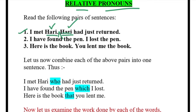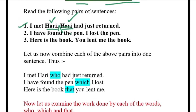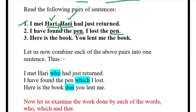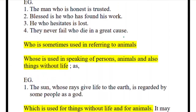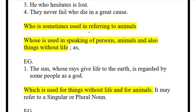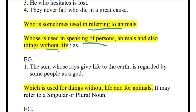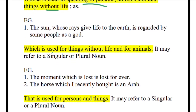If this is not a human being — for example, 'I have found the pen, I lost the pen' — what is repeated? 'Pen.' A pen is not a human being, so how will we join these two sentences? 'Who' is sometimes used for animals; 'whose' is used when speaking of persons, animals, and also things without life. 'Which' is used for things without life and for animals. With living beings you join using 'who' and 'whose'; with non-living things you use 'which' and 'that.'